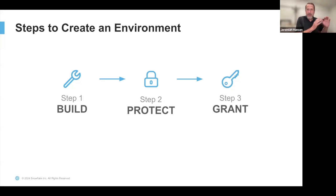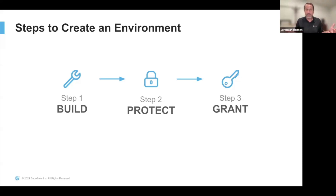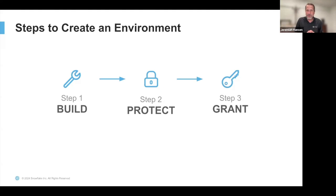Anything in between is possible too. Step two means applying whatever policies your organization has — that could be obfuscating PII data, which is generally standard, or sometimes removing it entirely even if obfuscated. Using Snowflake features like row access policies and column masking can help protect PII and sensitive data. Only after you've set up your environment and protected it do you grant access to it. I've seen situations where customers forget that step and their users already have access, which can be bad.